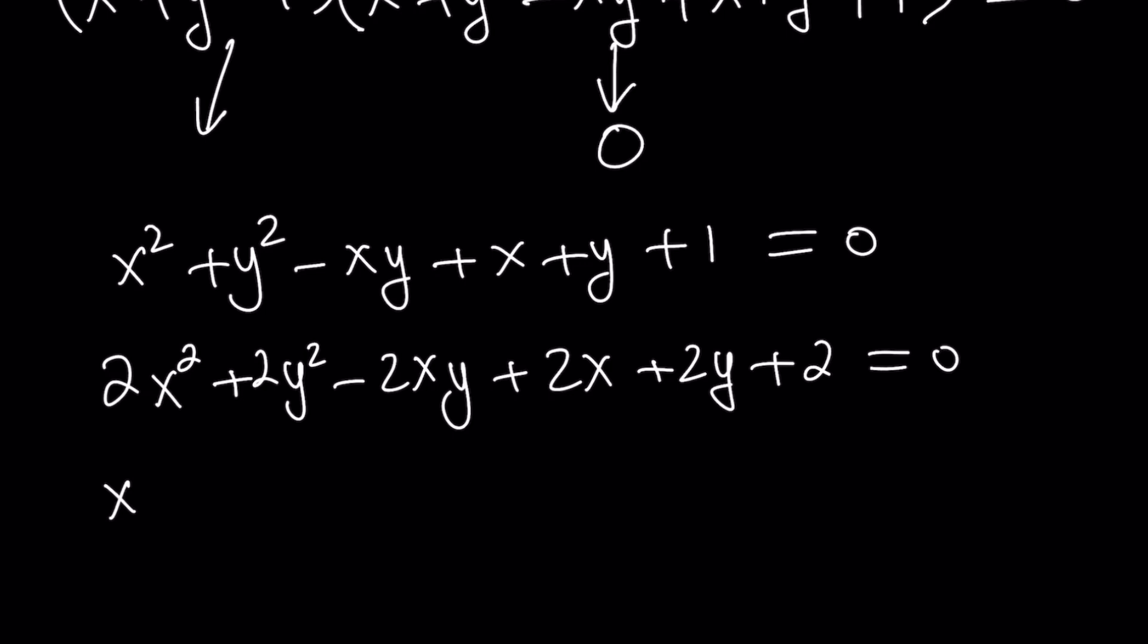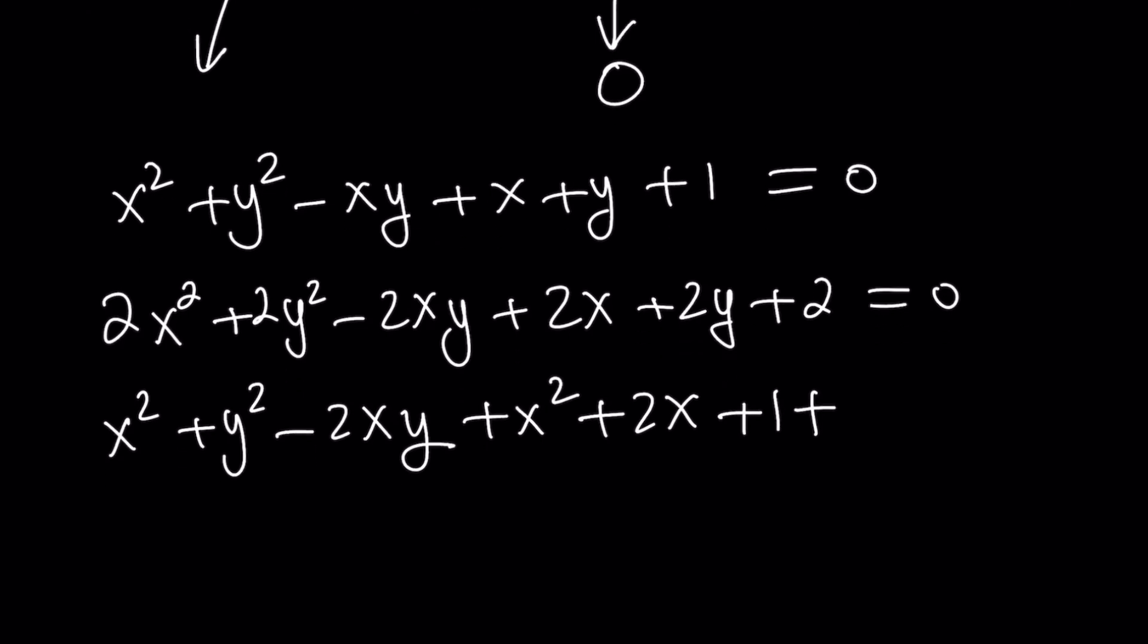Then I have x squared left. I can put that up with 2x and then add one to it. That's another perfect square. What I have left is just another perfect square. Everything is perfect. Everything is awesome. y squared plus 2y plus 1 is what is left over, and the whole thing is equal to 0.